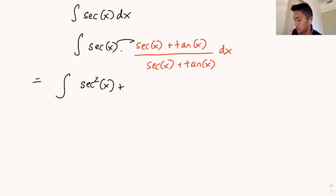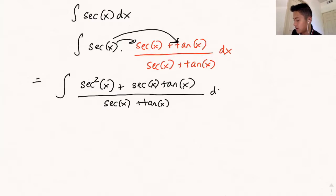We distribute the secant to both of these terms. So we have secant squared of x plus secant of x tangent of x, and then we have the denominator, just secant of x plus tangent of x and dx. So now you're wondering, how is this any simpler? Let's focus on the denominator here.